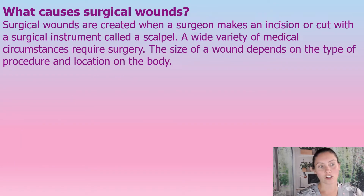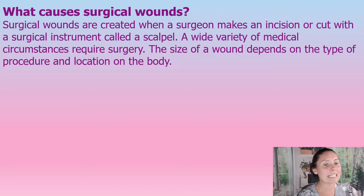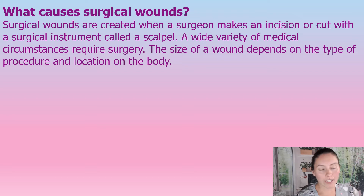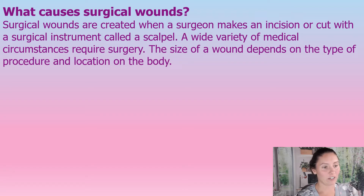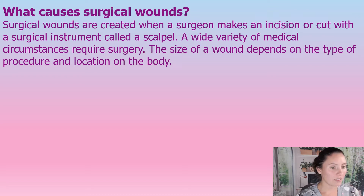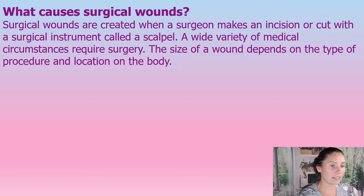So what causes a surgical wound? A surgical wound is created by a surgeon making an incision with surgical instruments such as a scalpel. There is a wide variety of reasons that require surgery, and they're all different. The wound size will depend on the procedure, the location on the body, and even the body type — all of which affect how large a wound needs to be.